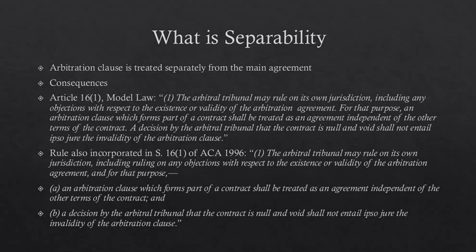The first part of both provisions — which are virtually identical — embodies the competence-competence doctrine, also known as 'compétence de la compétence.' The basic point is that the arbitral tribunal is empowered to rule on its own jurisdiction, including ruling on any objections with respect to the existence or validity of the arbitration agreement.